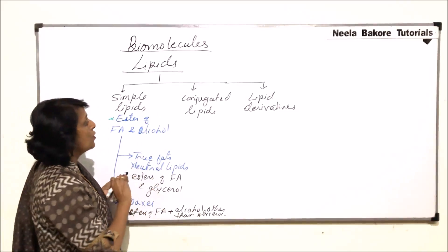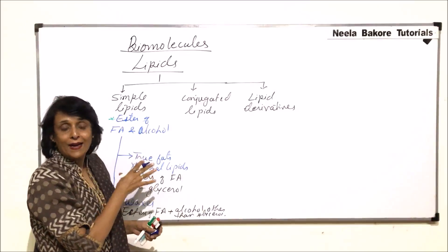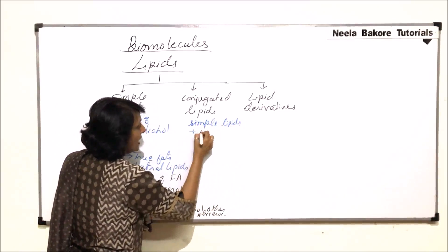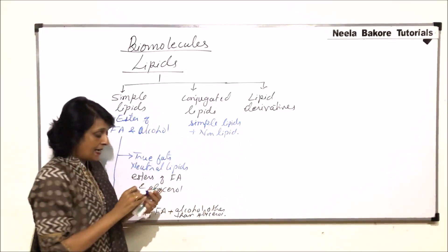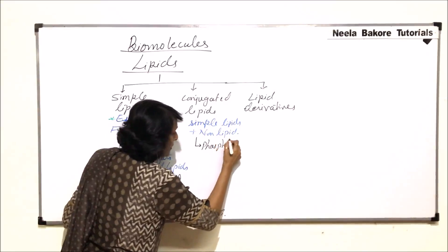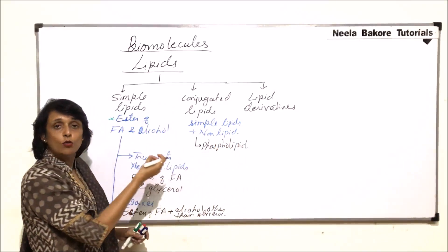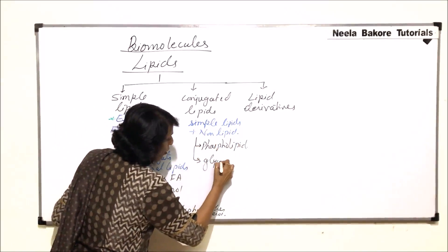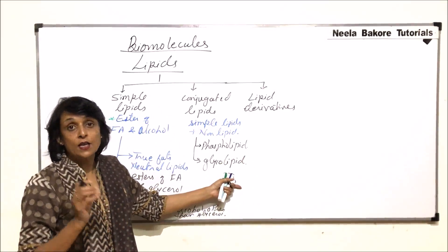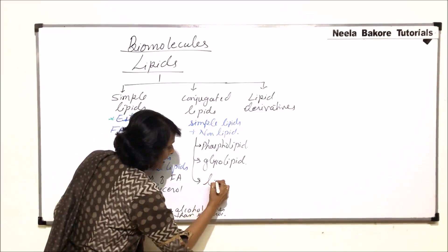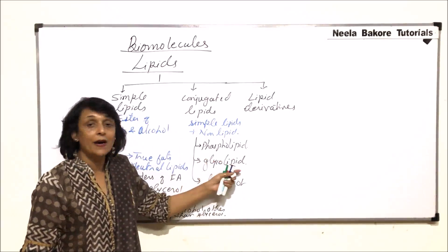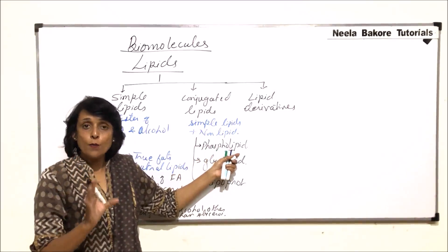Conjugated lipids mean true fats or simple lipids plus something else — specifically, simple lipids plus a non-lipid part. For example, phospholipid has a phosphate group attached with the lipid. Glycolipid has a carbohydrate associated with lipid. And if it is a protein associated with lipid, we call it a lipoprotein. So along with lipid there is some non-lipid part, and that kind of lipid is called a conjugated lipid.